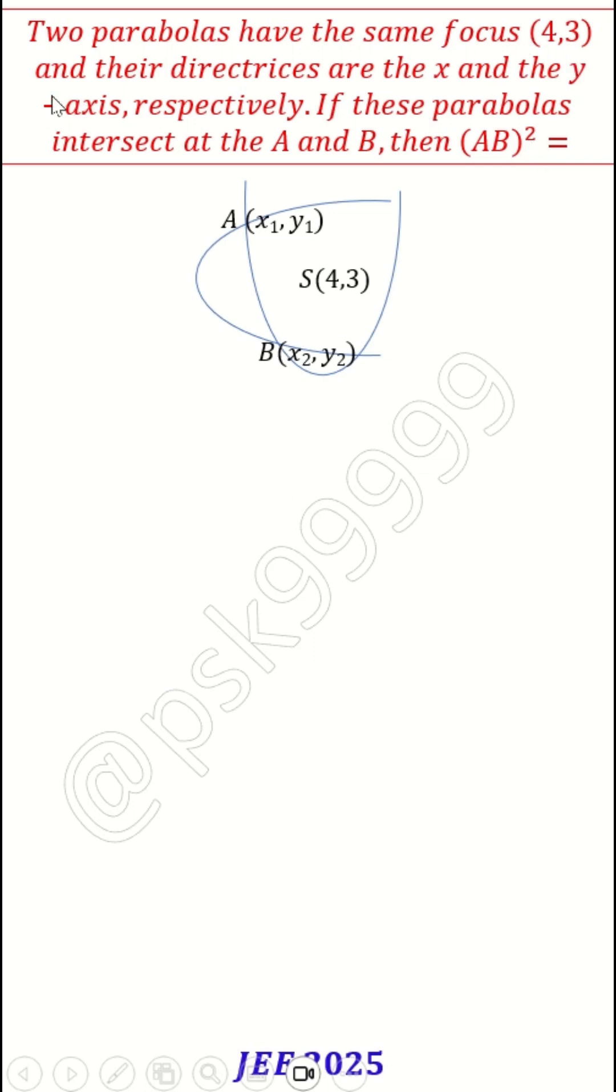Two parabolas have the same focus 4 comma 3 and their directrices are the x and y axis respectively. If these parabolas intersect at the point A and B, then AB square is how much?